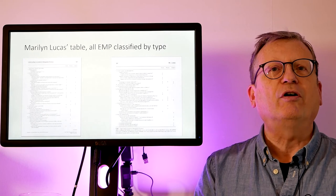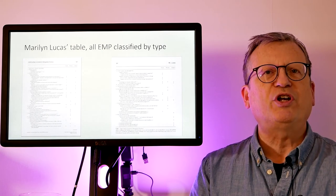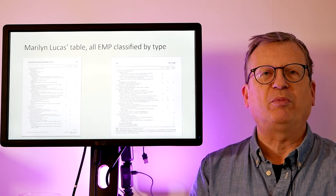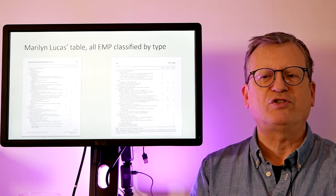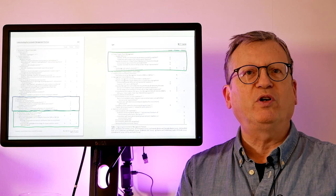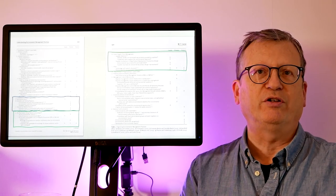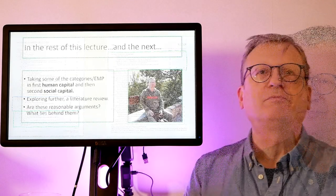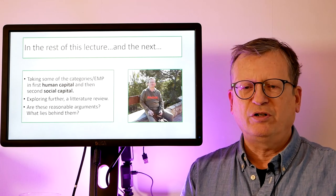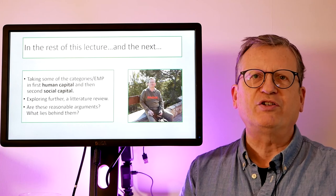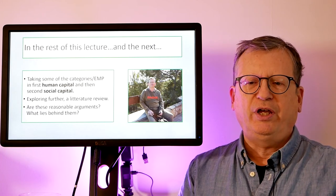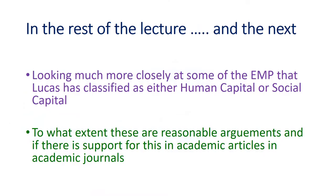Here we can see parts of her article. There is a table which takes up two pages showing the large number of environmental management practices that she has identified and classified. In this lecture and the coming pre-recorded lecture I am only interested in the blue and green areas — these are the human and social capital environmental practices she identifies. I will take some, not all, of the practices in those areas and look at them in more depth through a literature review.